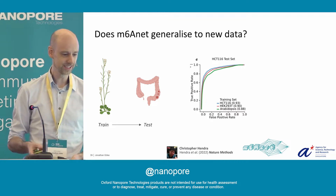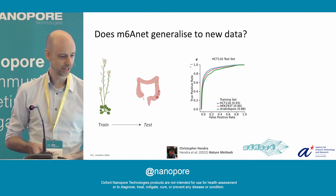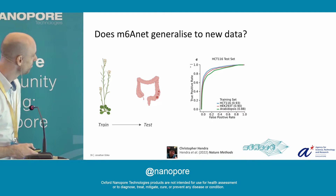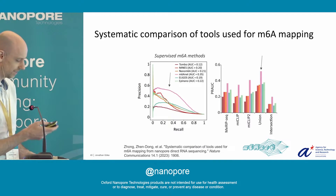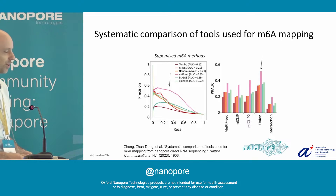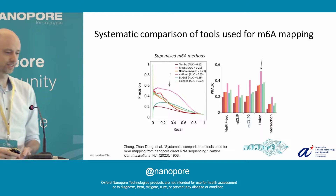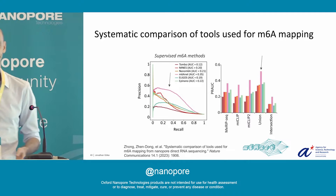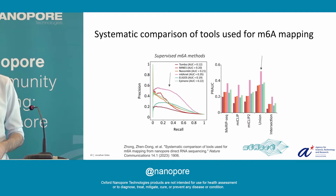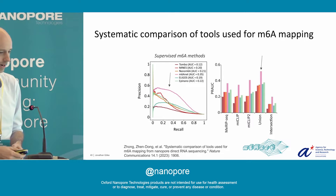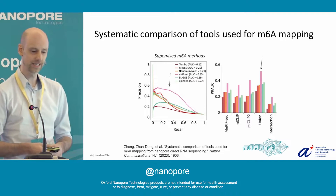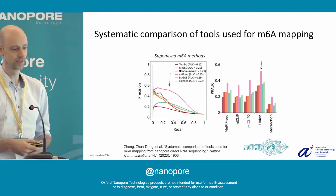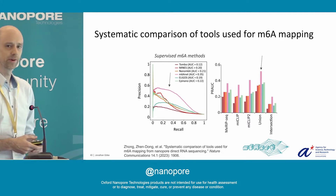If I have not convinced you yet, other people have looked into it too. A few months ago, there was a benchmark of all existing methods to detect M6A from direct RNA sequencing data, and the picture looks very similar — M6ANet shows very good performance.